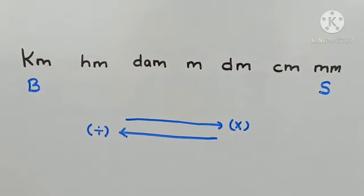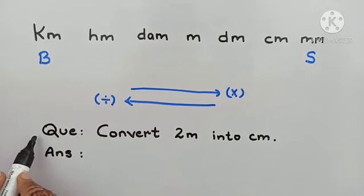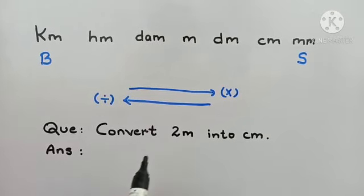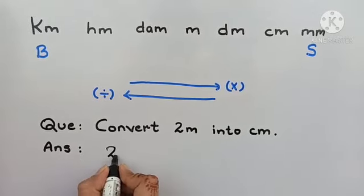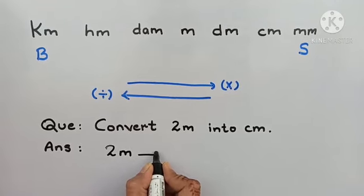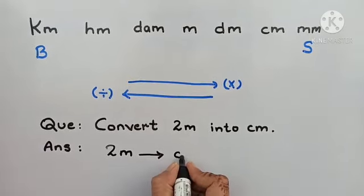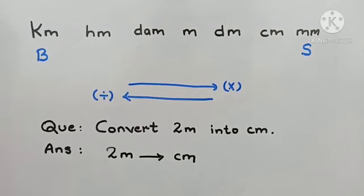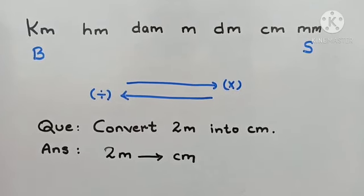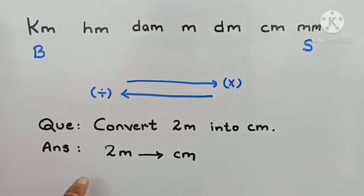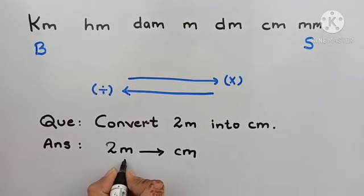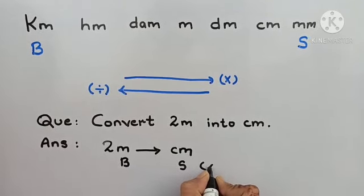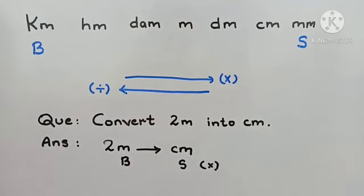Now let us attempt the question. Here the question is convert 2 meter into centimeter. We have to convert 2 meter into centimeter. And according to the order of the units, meter is the bigger unit and centimeter is the smaller unit and our conversion is big to small. So we do the multiply.